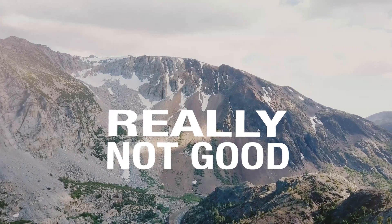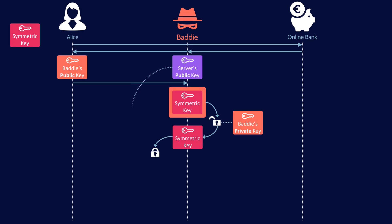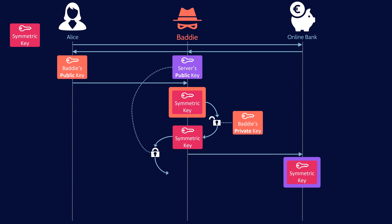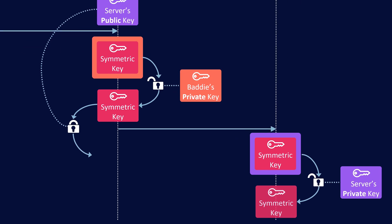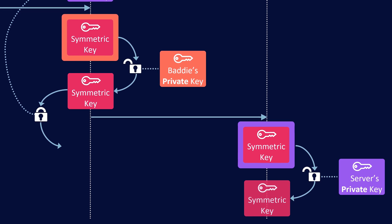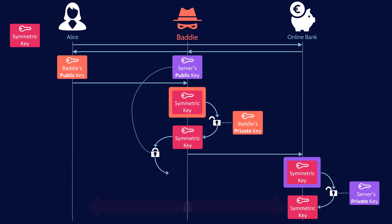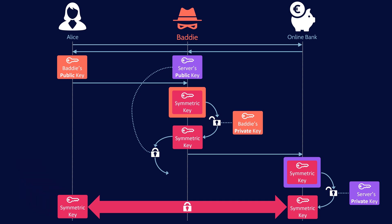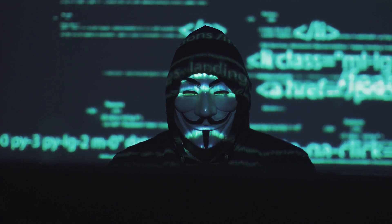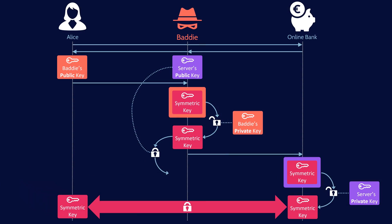Not good at all. The baddie proceeds to re-encrypt that symmetric session key with the server's public key and forward that ciphertext on to the server. The server decrypts it with its private key and now has a copy of the symmetric key. Alice also has a copy, and they begin communicating back and forth thinking this is a secure connection — but it is not, because the baddie also has the symmetric key. This encrypted session is not secure at all.